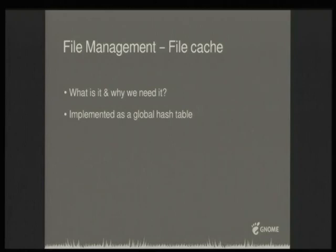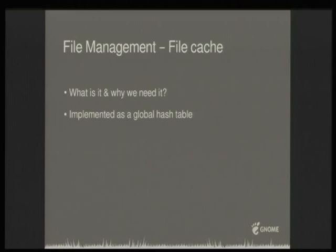One important thing: the cache. For a file manager, the most important data is on the hard disk, but accessing the hard disk is expensive. A cache keeps on RAM — fast memory — everything needed about those files. The first time you access a directory it will be slow, but the next time you can have the directory and its children's information already in RAM and it will be fast. The cache is implemented as a global hash table: you look up the file there, and if it's not present you go to the hard disk and populate the hash table.